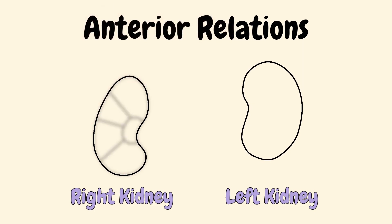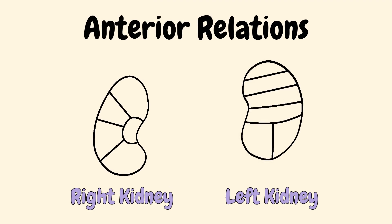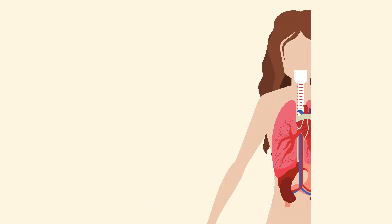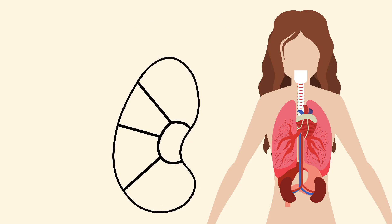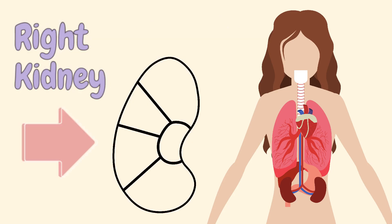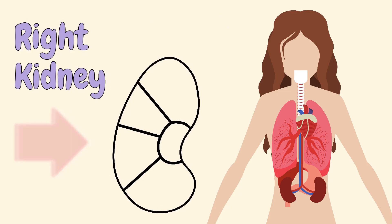Next we'll divide the right kidney into sections like this, and the left kidney into sections like this. To show which organ each section is related to, we'll start with the right kidney using our first mnemonic.